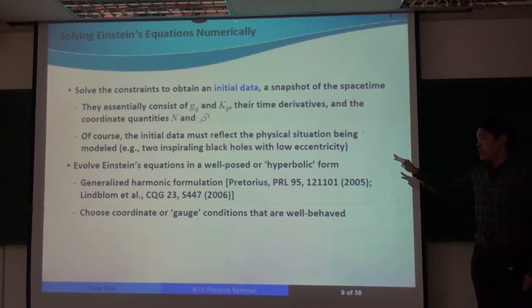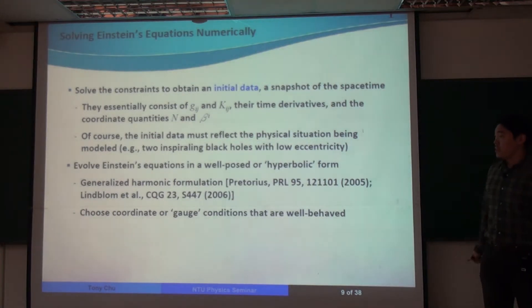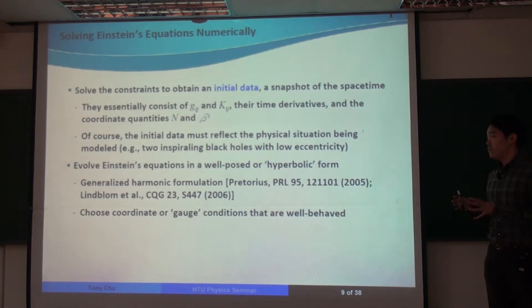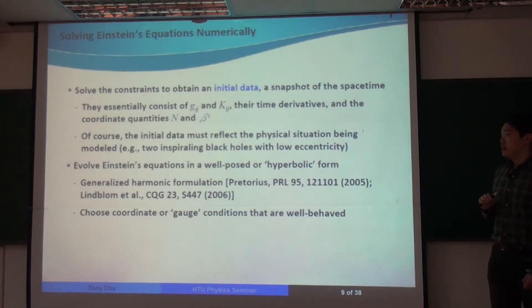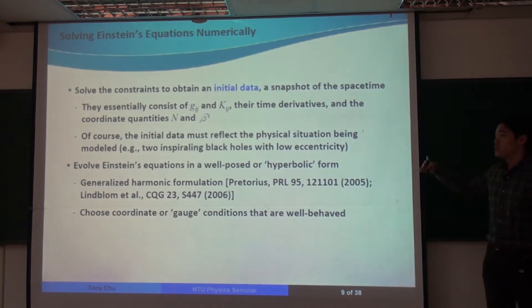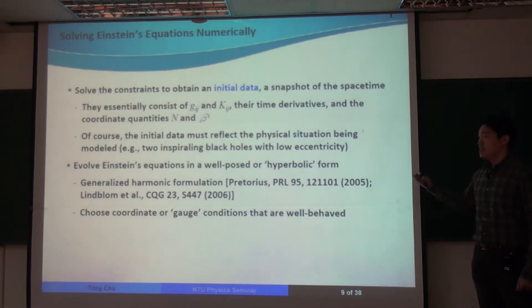However, if they're not well-posed, then if you have a violation of the constraints in your initial data, even if they're small, they could grow very fast once you evolve that initial data.